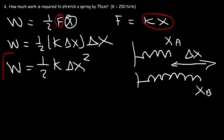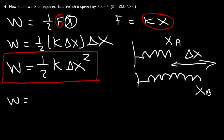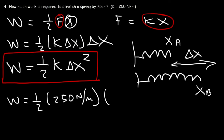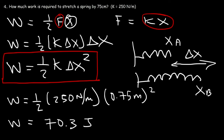So this is the equation to use. k is 250 newtons per meter, and we want to stretch the spring by 75 centimeters. Converting to meters: 75 divided by 100 equals 0.75 meters. So it's 0.5 times 250 times 0.75 squared, which gives a work required of 70.3 joules.